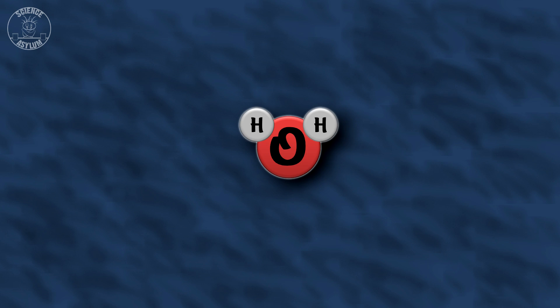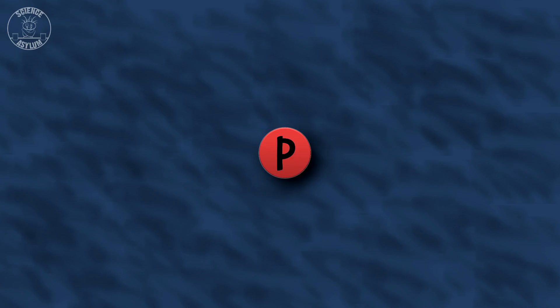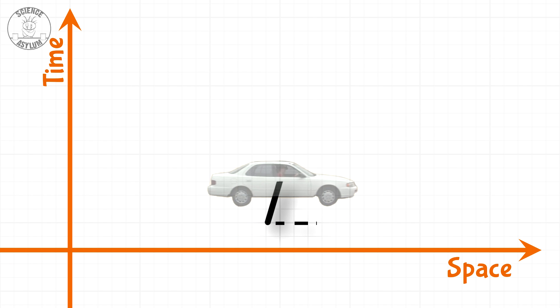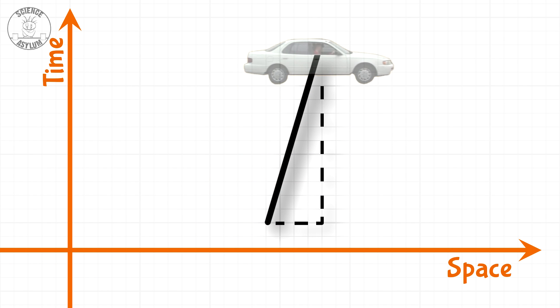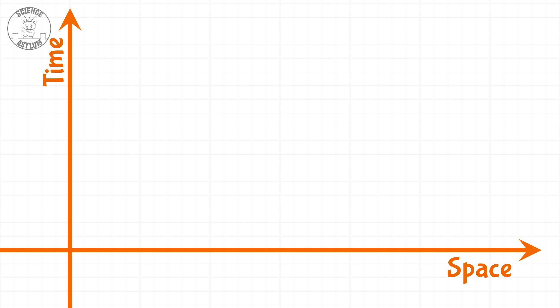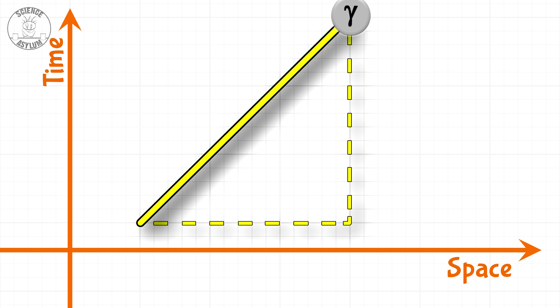Anything with mass — me, the car, a water molecule, the earth, or a proton — anything you might call an object must travel more through time than it does through space. The time component is always bigger for the space-time path of an object. Things without mass, like photons of light, travel along diagonal paths where the time and space components are the same size.